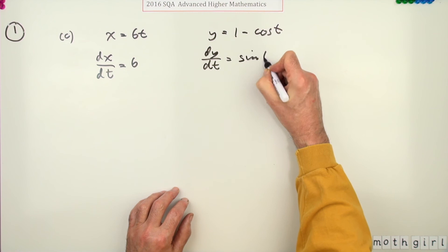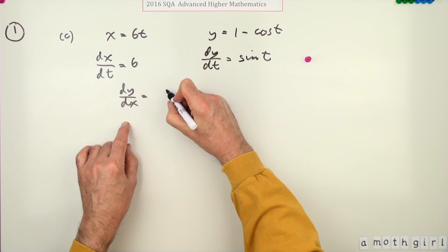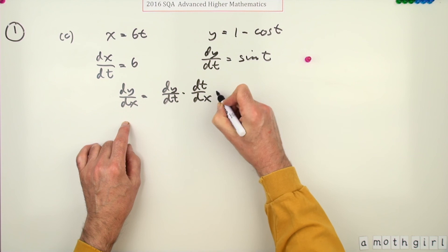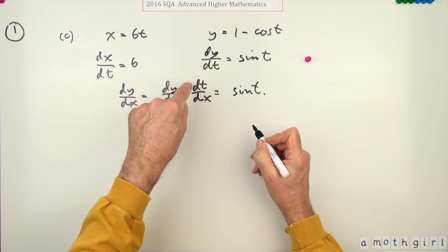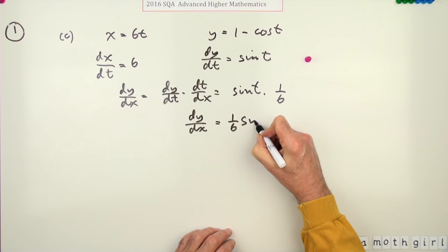Now getting both of those correct gives you the first mark. So when it says what's dy by dx, well I'll have to do dy by dt, it's the chain rule, and then dt by dx. So that means it's going to be dy by dt which is sine t, now dt by dx is the reciprocal of that so it'll be times one upon six, or I could just write it neatly again: dy by dx equals one sixth of sine t.